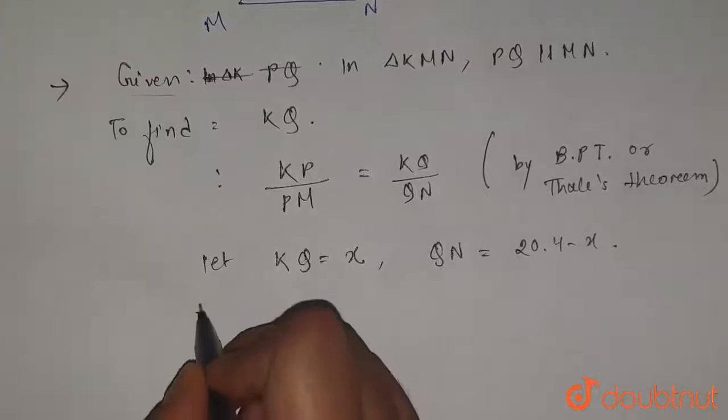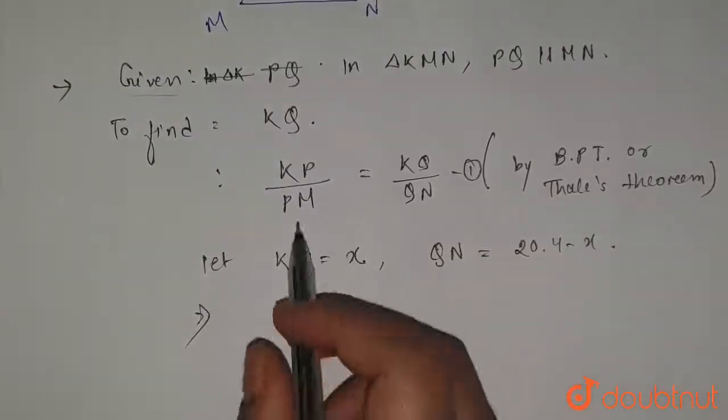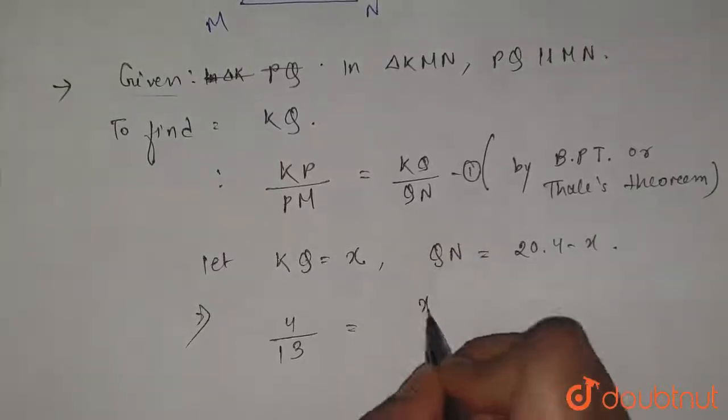So from here will be equation number one. So from one we can write, now KP by PM, we already have the value which is given as 4 by 13, and KQ is x divided by 20.4 minus x.